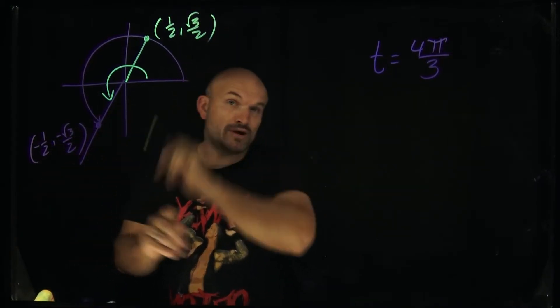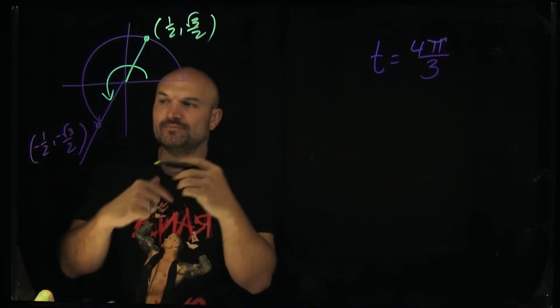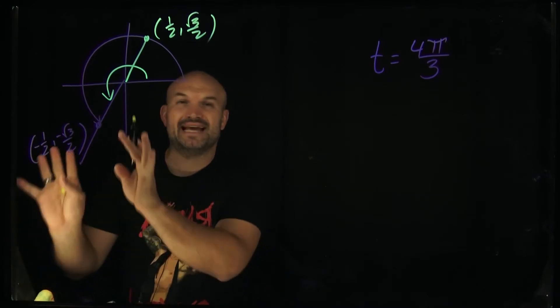The difference is this is in the first quadrant, so the x and the y coordinate are positive, whereas this angle is in the third quadrant, so both my x and my y are going to be negative.